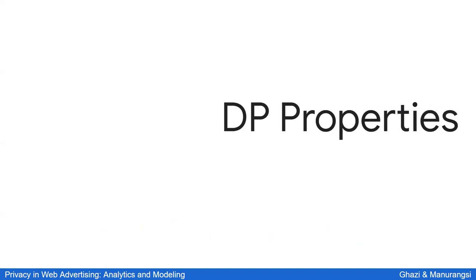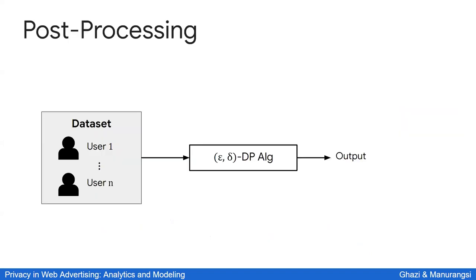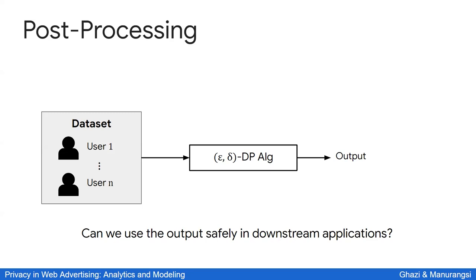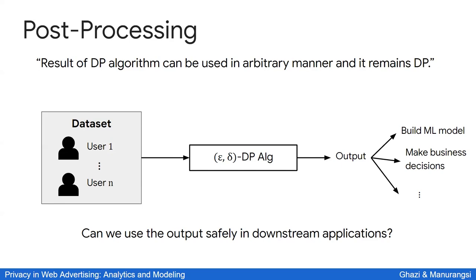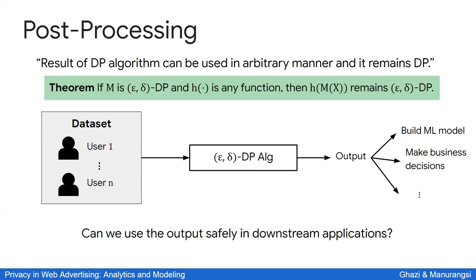There are several nice properties of differential privacy. The first is post-processing robustness: if you run a DP algorithm and get some output — maybe an ML model or analytics — you can use that output arbitrarily in downstream tasks and it remains DP. Formally, if mechanism M is ε-δ DP, then for any post-processing function h, the composed mechanism h∘M is also ε-δ DP. This means you can use DP outputs in downstream tasks without worrying about leaking the original dataset.